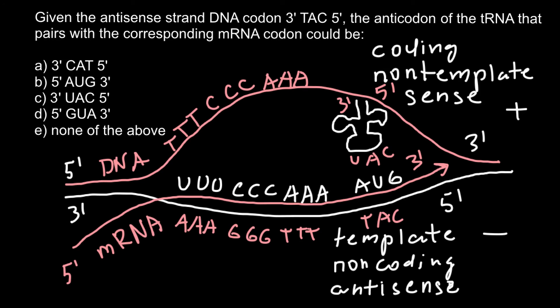Looking at our answers, we have answer C as the correct answer: 3' UAC 5'. So the tRNA anticodon is UAC running from 3' to 5'.